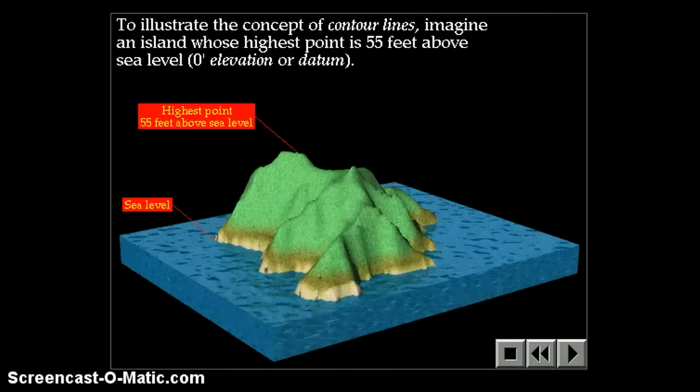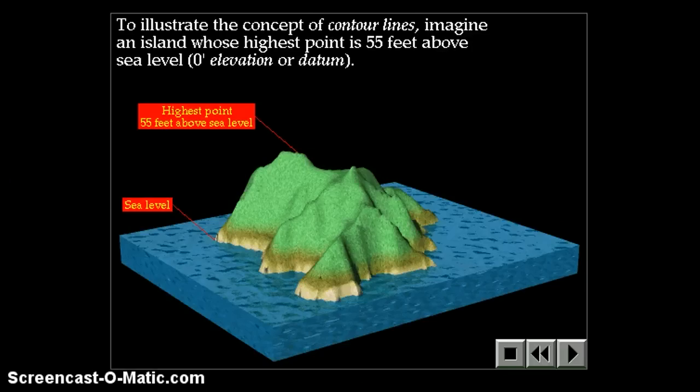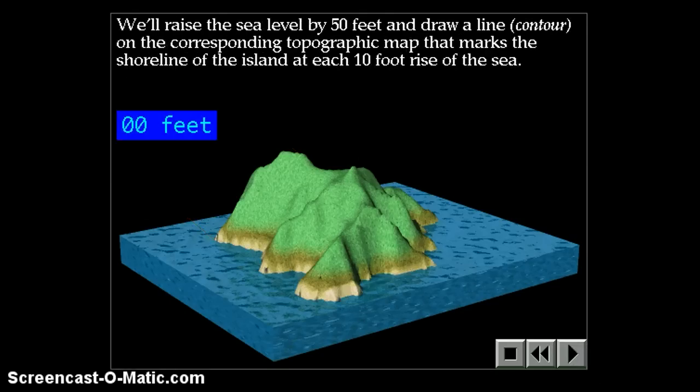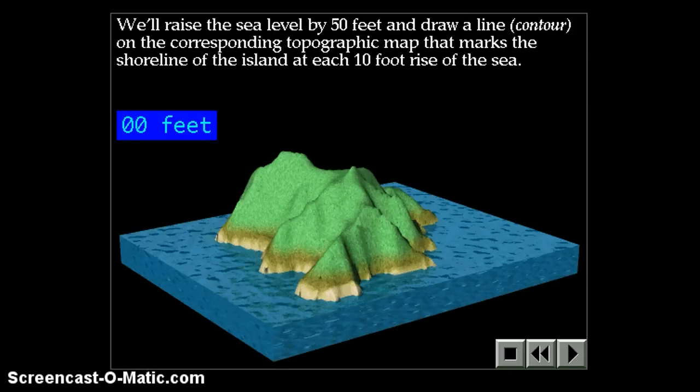To illustrate the concept of contour lines, imagine an island whose highest point is 55 feet above sea level. The datum is going to be the sea level or the zero mark. We're going to raise sea level by 50 feet and draw a line on the corresponding topographic map that marks the shoreline of the island at each 10-foot rise of sea level. So at the zero-foot mark, we would just trace the shoreline.